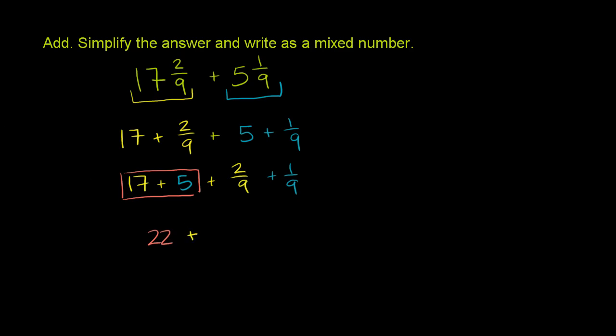Now what is 2/9 plus 1/9? They have the same denominator, so it's going to be over 9. And then you add the numerators. 2 plus 1 is 3. So it's 22 plus 3/9.